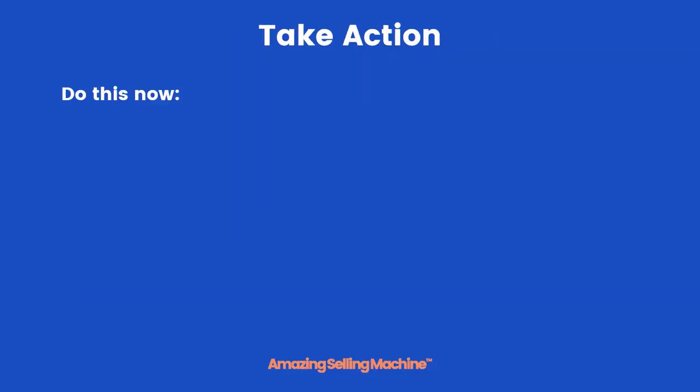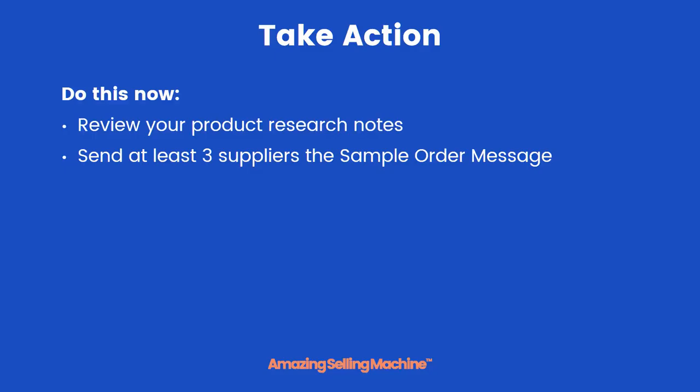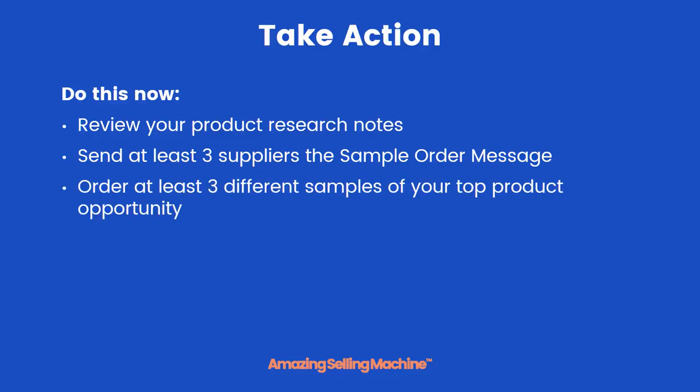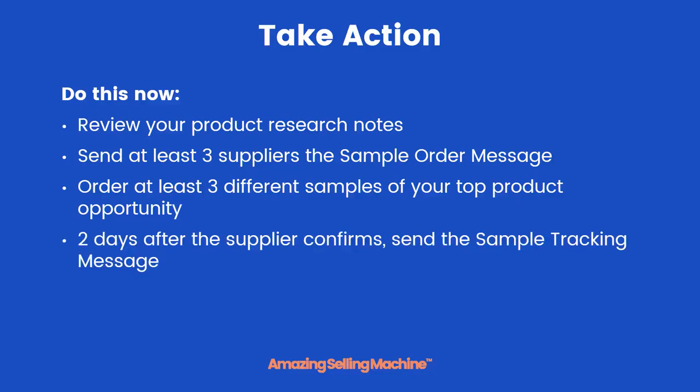Now it's time to take action. Review your product research notes and send at least three suppliers the sample order message to order three different samples of your top product opportunity. Then, two days later, after the supplier has confirmed they sent it, follow up with the sample tracking message to get the tracking link. That's it for this lesson — I'll see you in the next video where we're going to wrap up this entire module.